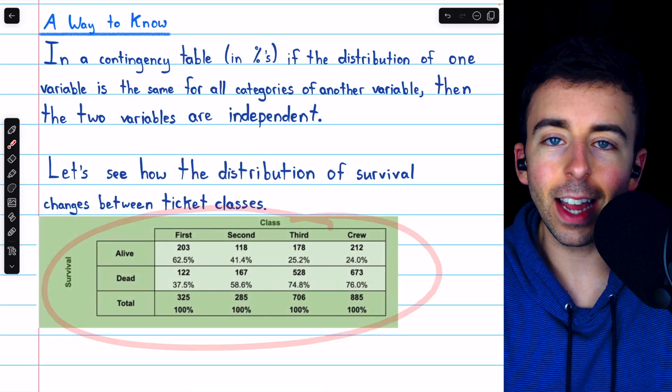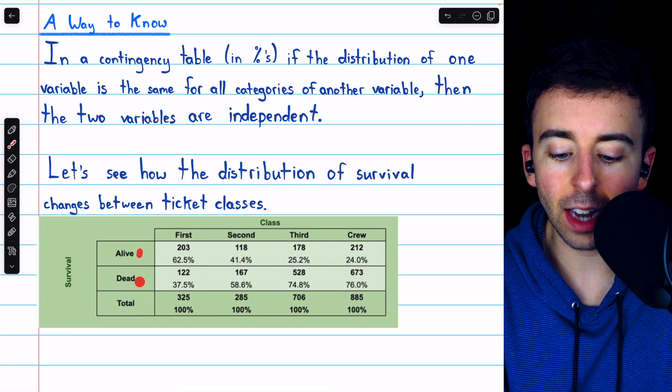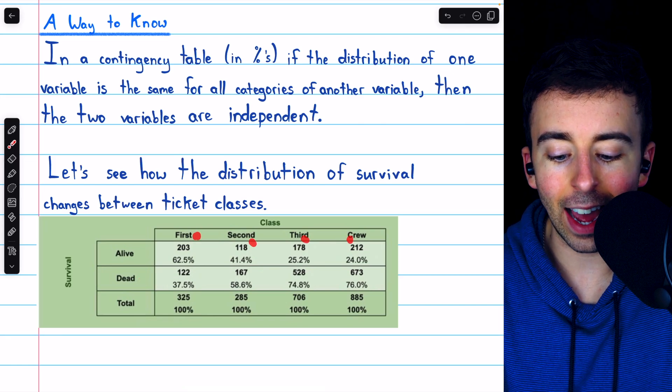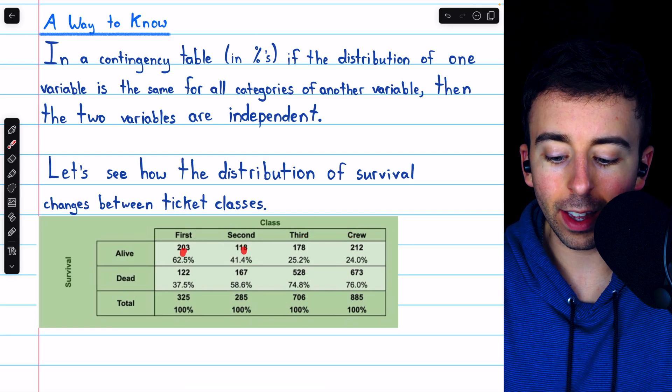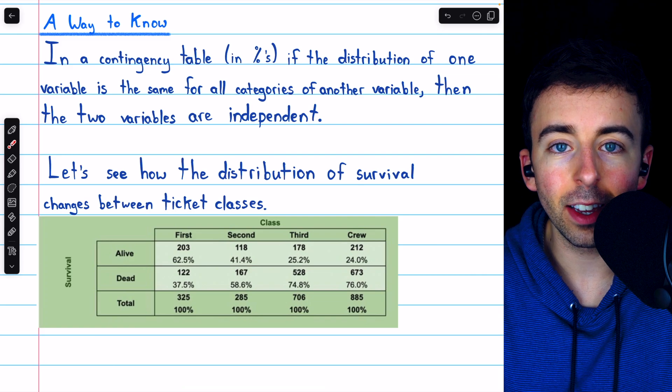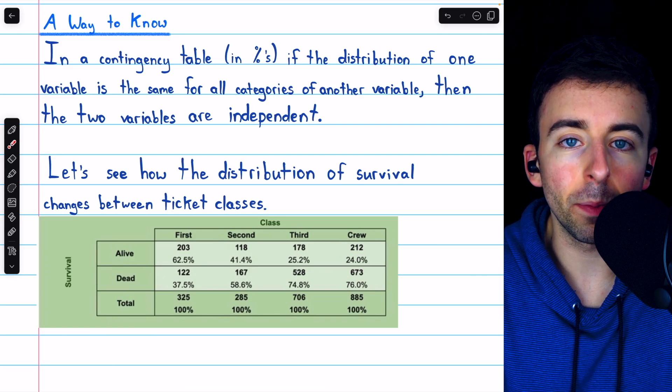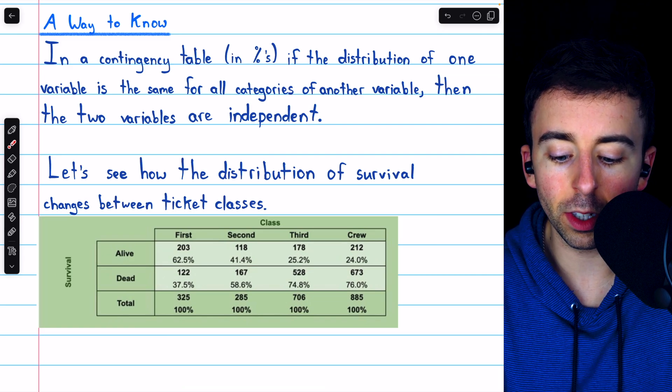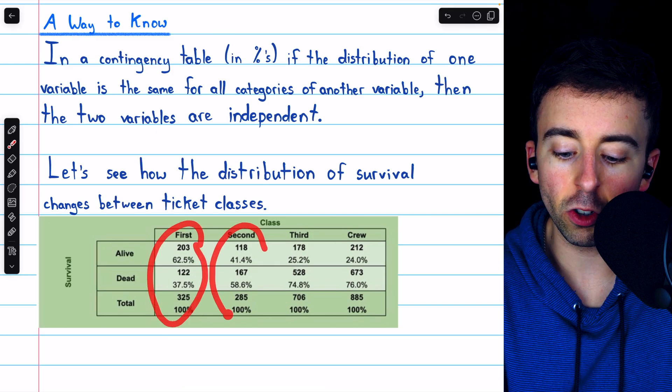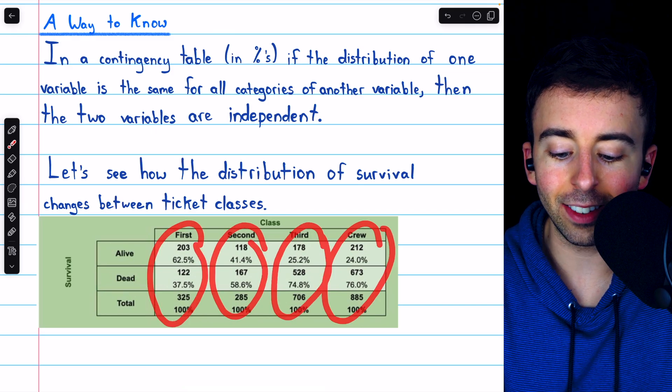So here we are again looking at data concerning the survival status of those aboard the Titanic and their ticket class. And we have the raw counts here, the frequency data, but we also have the percents. Specifically, we've calculated the percents for the conditional distributions of survival status across each of the four ticket classes.